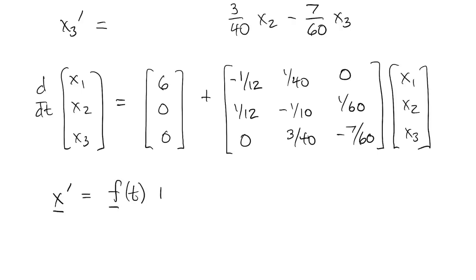So we can summarize the whole thing as a vector x-prime, x-prime is a function of t, a vector function of t, plus a square matrix A times x.